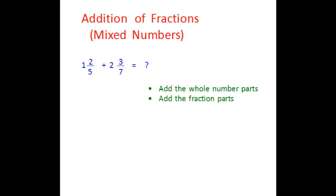We will first add the whole number parts. The whole number in the first mixed number is 1 and in the second mixed number the whole number is 2. So 1 plus 2 becomes 3. Now let's add the fraction parts — that means we are going to add 2 over 5 and 3 over 7. The LCM of the denominators 5 and 7 is 35.